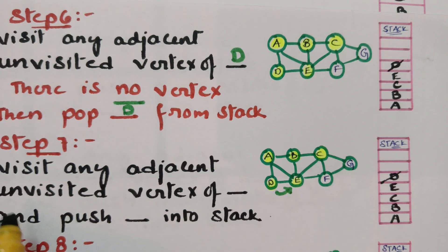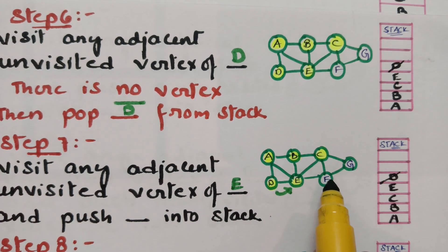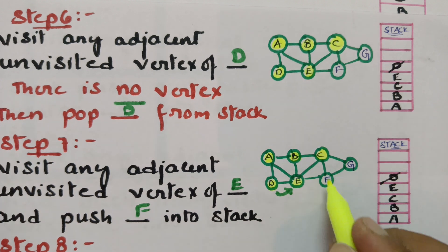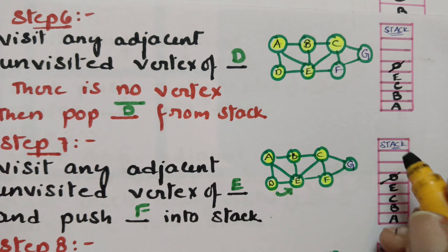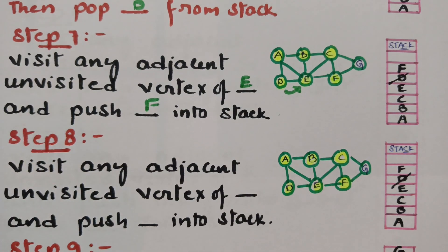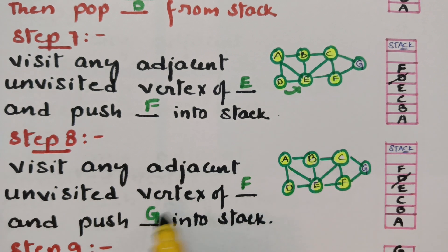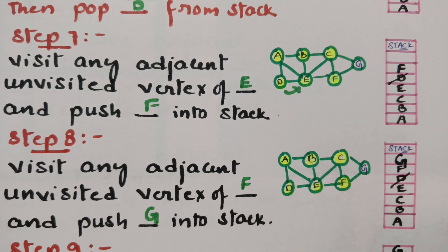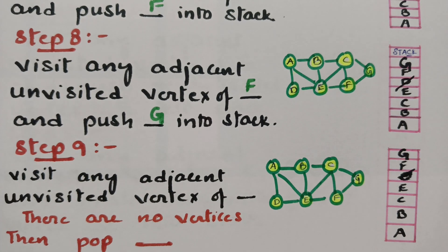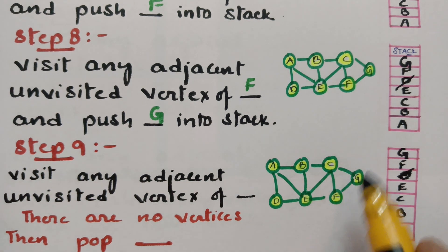From E, visit any adjacent unvisited vertex. The unvisited vertex is F, so push F into the stack. Step 8: Visit any adjacent unvisited vertex of F. The unvisited vertex is G, so push G into the stack. I have now visited G.